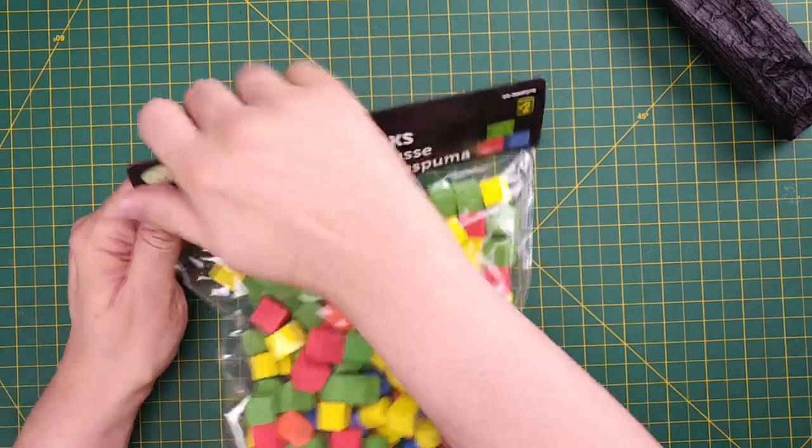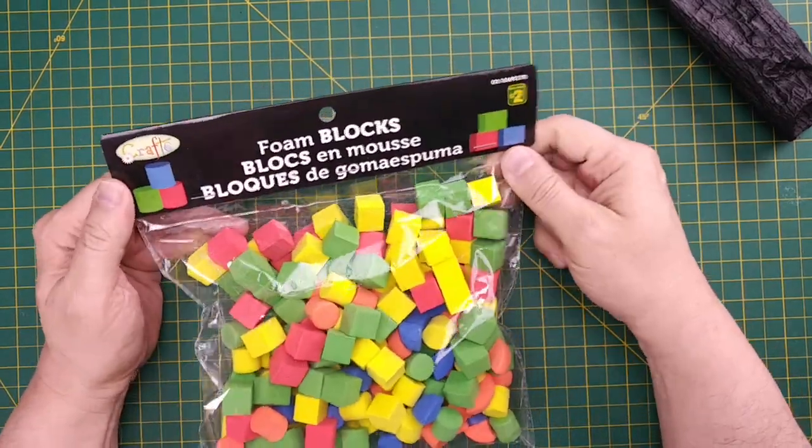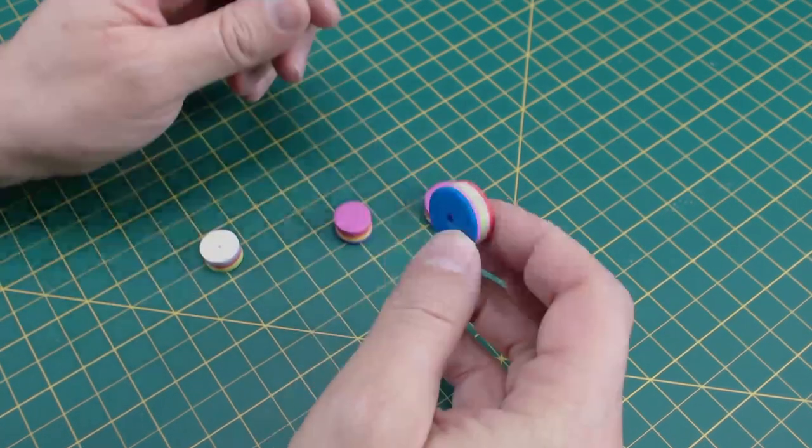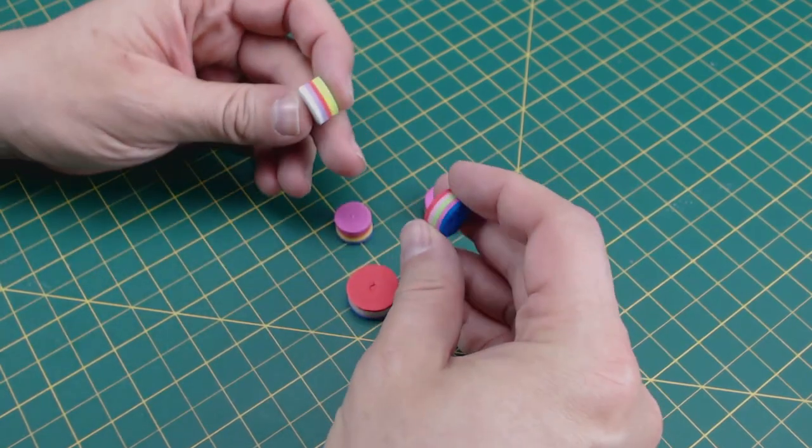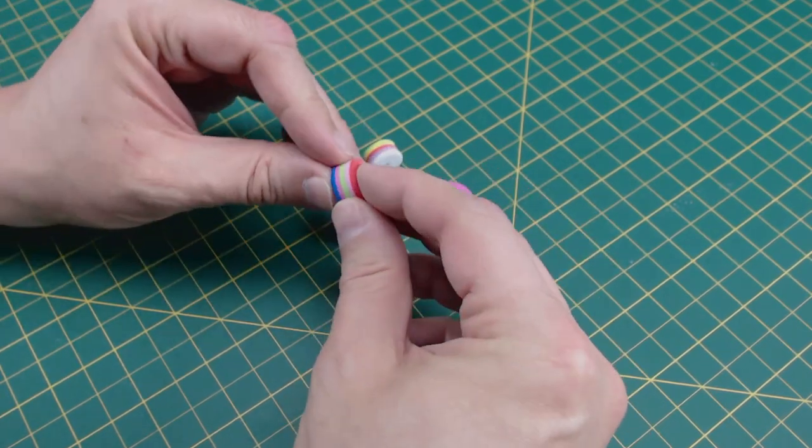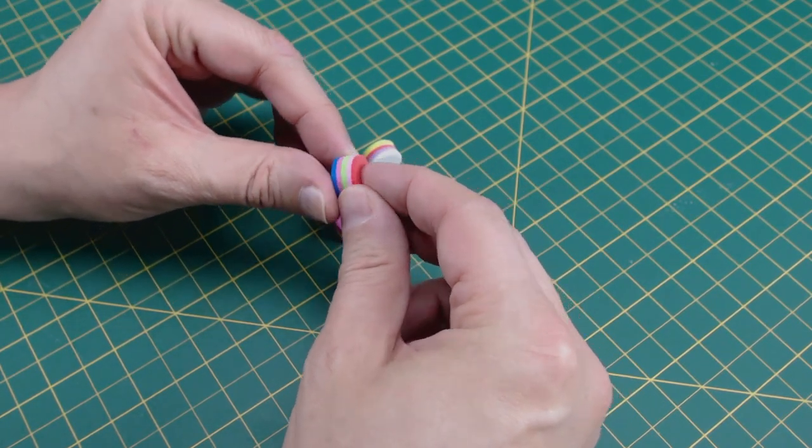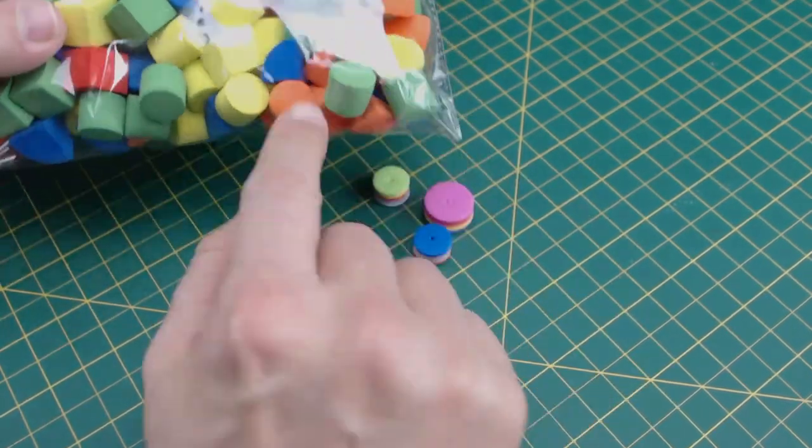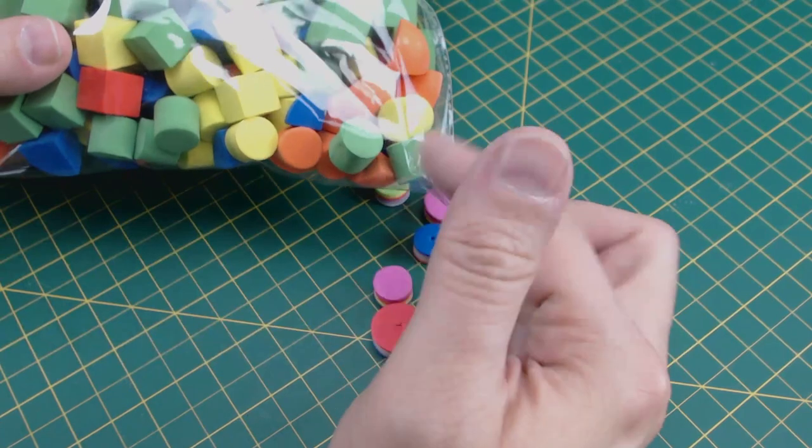I found these EVA foam shapes at the dollar store, and they're perfect for what I have in mind. I also have these EVA foam shapes, which I found in the dollar store, but they come in these stacked layers. These layers are lightly glued together, and are quite easy to separate. These are much easier to use than cutting these solid shapes, or cutting a thin sheet of EVA foam.